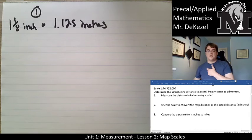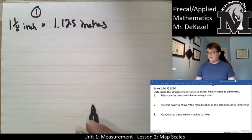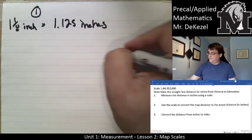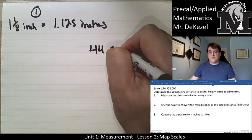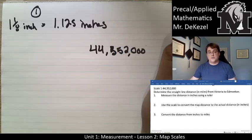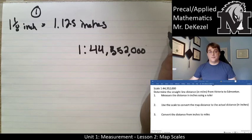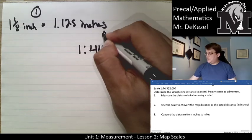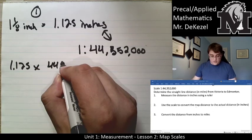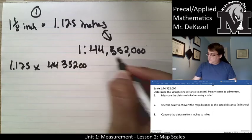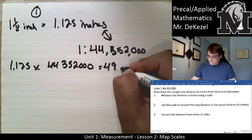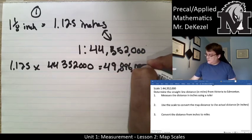The second step is to use the scale to convert the map distance into the actual distance, and again this is going to be the distance in inches. We know that every one inch is 44 million, let's write that down, 44,352,000 inches, 1 to that number. So we're going to multiply these two numbers together: 1.125 multiplied by 44,352,000. That will get us 49,896,000 inches.